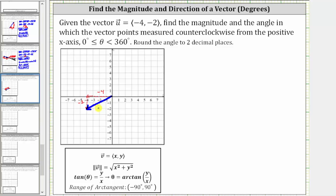Notice by sketching the horizontal and vertical components, we now have a right triangle on the coordinate plane that we can use to determine the magnitude, which is the length of the vector, and then the angle theta, which is the angle measured from the positive x-axis to the vector.